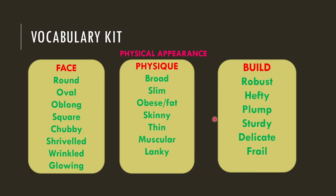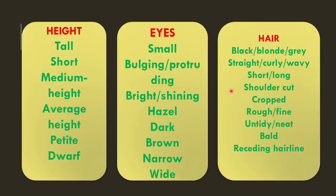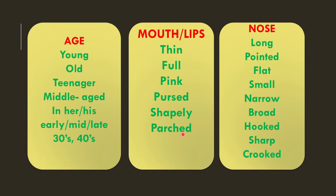Here is the vocabulary kit to describe physical appearance. You can take words to describe the face, physique, build, height, eyes, and hair. You can pick any words and it's not a necessity to describe all these things — you can describe two or three. For example, if you want to describe eyes, you can write they were small, bulging, protruding, hazel, brown, or narrow. Then if you want to describe age, mouth, lips, or nose, you can pick words accordingly.